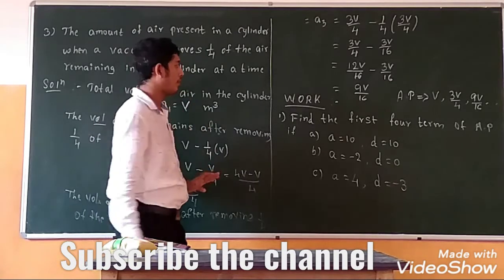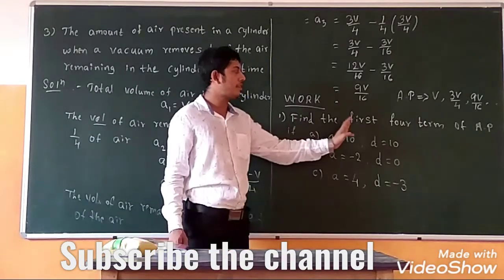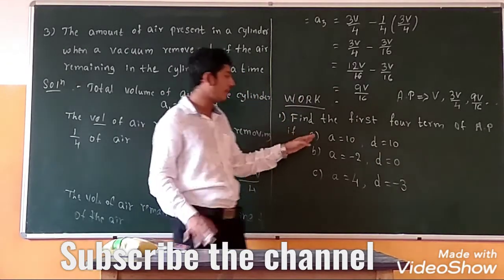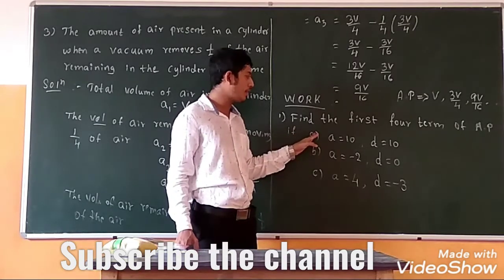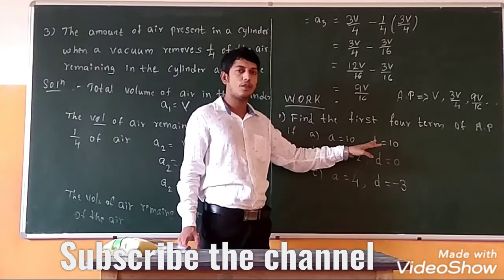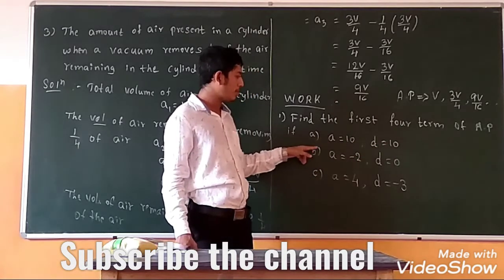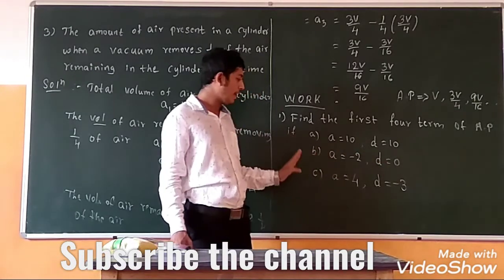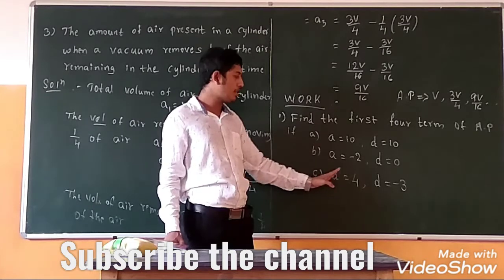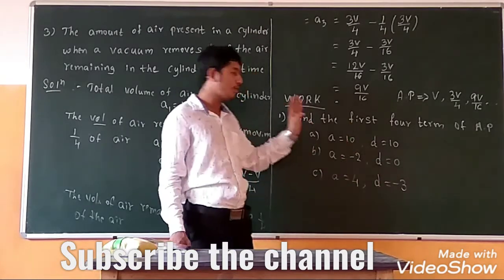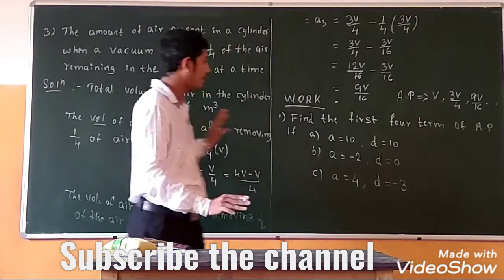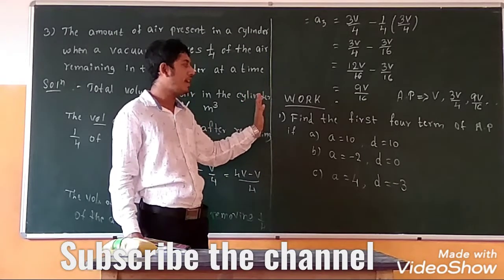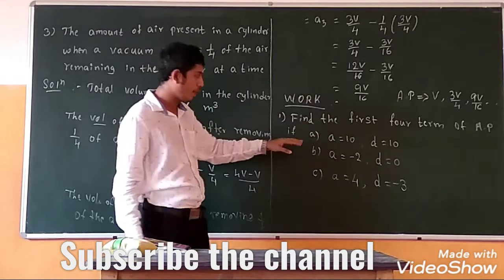Now find the first four terms of the AP when the following conditions are given. First condition: the first term a equals 10 and the common difference d is 10. Second condition: the first term is minus 2 and the common difference d is 0. Third condition: the first term is 4 and the common difference is minus 3. You know the arithmetic progression definition — for the next term we add the common difference.